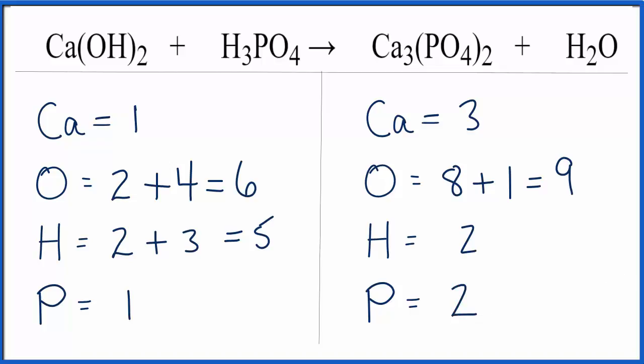So a lot of things are messed up here. I think I'd like to start and fix the phosphorus atoms first. That looks fairly easy. So I could put a two in front of the phosphoric acid, the H3PO4, and then I'd have to update everything, the phosphorus and the oxygens and the hydrogens. So let's do that.